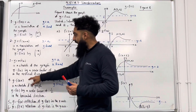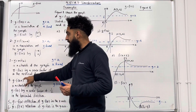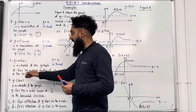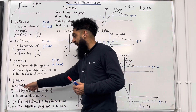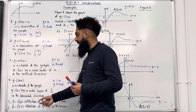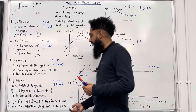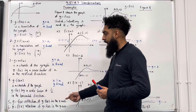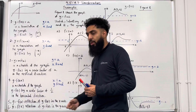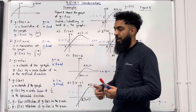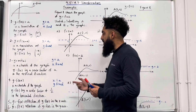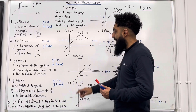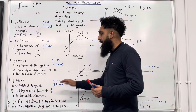Number 4: y equal f of ax, where ax is inside the bracket, is a stretch of the graph y equal f of x by a scale factor of 1 over a in the horizontal direction. In other words, you take your x coordinate and you divide by a, keeping y fixed.